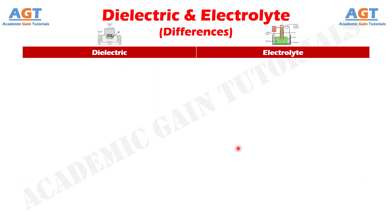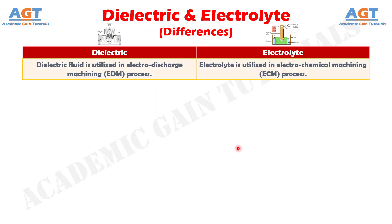Difference number one: dielectric fluid is utilized in electro discharge machining process, whereas electrolyte is utilized in electrochemical machining process.